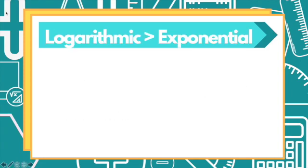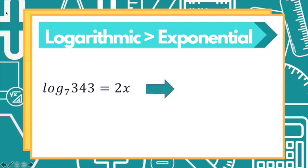You'll also need to change logarithmic equations into exponential form. For example, we have logarithm of 343 to the base 7 equals 2x. We have a base of 7, a power of 343, and an exponent of 2x. When we change this into its exponential form, we have 7 raised to 2x equals 343.